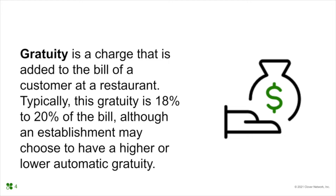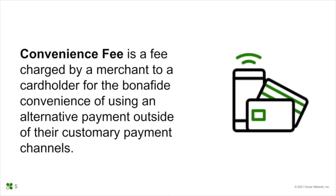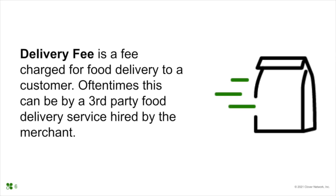You'll probably see gratuity a lot on a bill when you have a party of six at a restaurant. Convenience fee is a fee charged by the merchant to the cardholder for the convenience of using alternative payment outside of their customary payment channels — very popular when buying tickets online. Delivery fee is a fee charged for food delivery to a customer, oftentimes through a third-party food delivery service hired by the merchant.